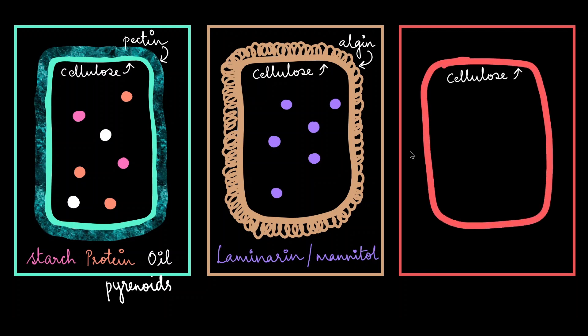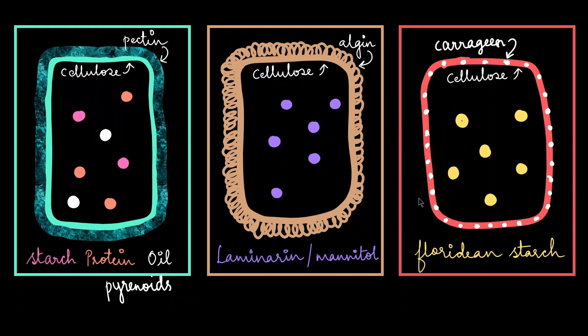Red algae primarily has a cellulosic cell wall which is incorporated with hydrocolloid substances like carrageenan. They also store floridian starch within their cytosol. Floridian starch has more resemblance to amylopectin and glycogen.